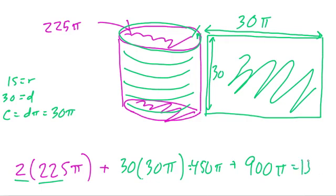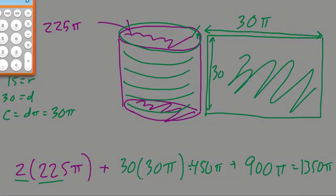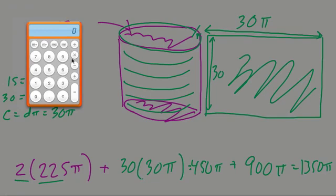Add up these two, we get 1350 pi, and then square units, whatever units that we're looking at. But if I want to estimate with pi, I can just say pi is equal to 3 in this case, because we're not really given a parameter here.